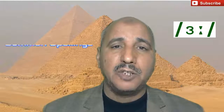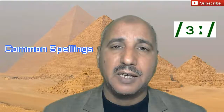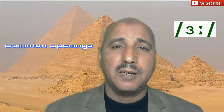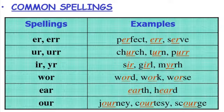تعالوا نشوف common spellings — إيه هي الحروف اللي بتكونلي هذا الصوت. أول حرفين: E-R، والحروف I-R-R — لو وجدناهم في كلمة بيكونوا لي هذا الصوت. زي كلمة perfect، serve. أيضا الحروف U-R وU-R-R.